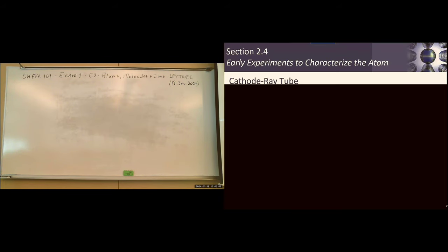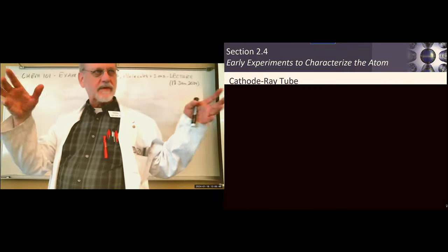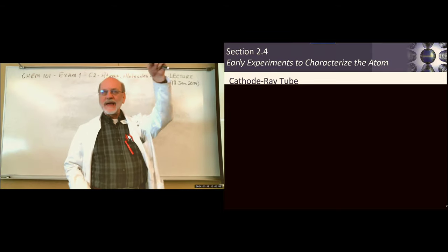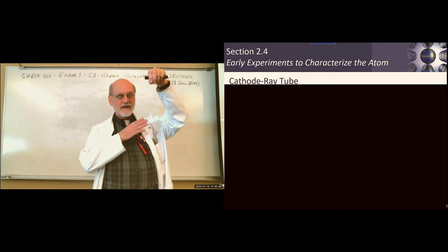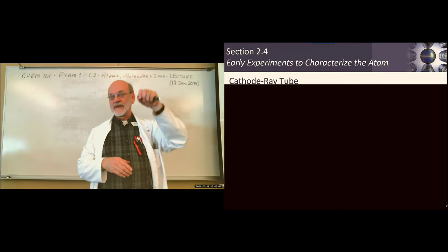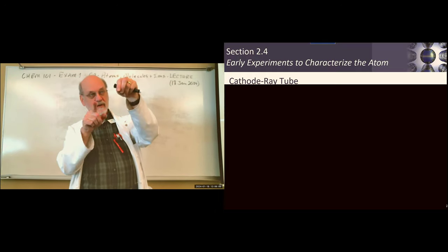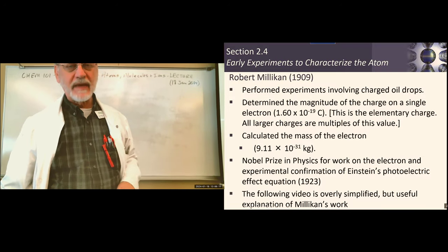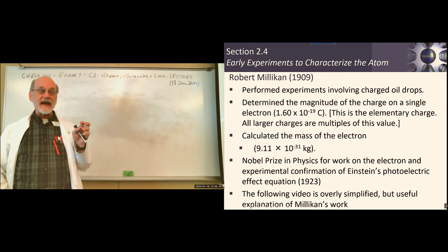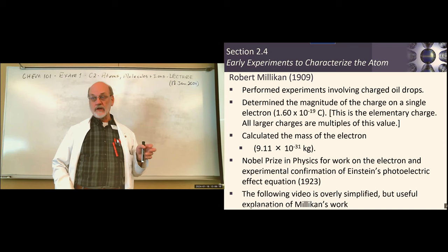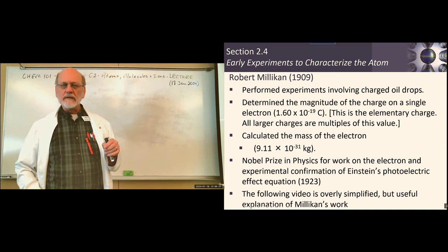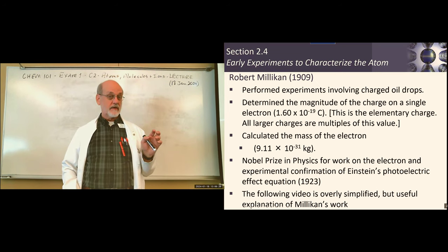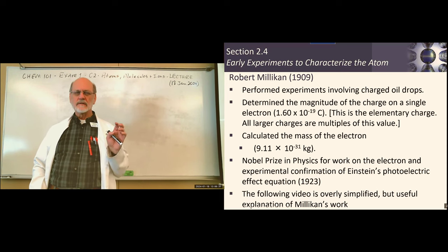When the magnet is placed over that cathode ray, it bends toward the magnet — and in a magnetic field it bends perpendicular to the field. So we know that part of the atom is made up of these negatively charged particles, which are called electrons.